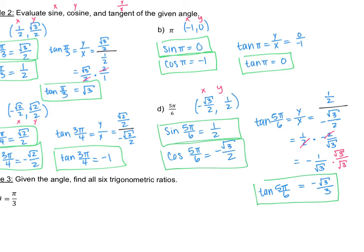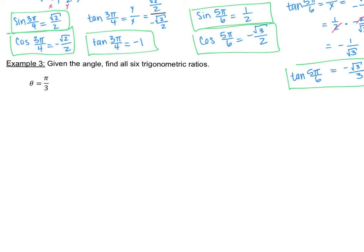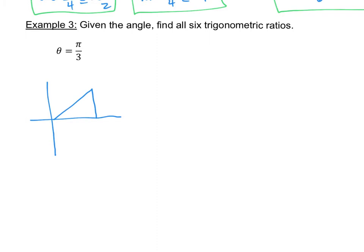That gives us sine, cosine, and tangent. The last problem asks you to find all six trigonometric ratios given the angle pi over 3, which is 60 degrees. I'll draw the unit circle with a triangle in it to help visualize it on the coordinate system. The radius of the unit circle is always 1, so I already know the hypotenuse.